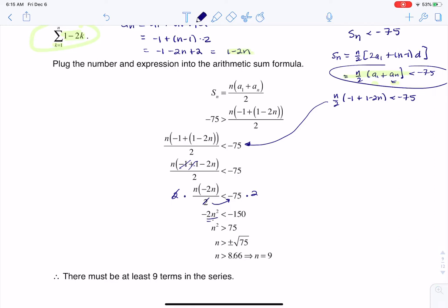And then ultimately, I still need to divide both sides by negative 2. And keep in mind, when you divide by a negative number, you need to change the direction of the inequality. So I went from less than to greater than. If I had been at this step, n times negative 2n over 2 is less than negative 75, I could have just canceled these and been left with negative n squared is less than negative 75, and divided by negative 1 on both sides and arrive at n squared is greater than 75. And that's the same expression I wound up with over here.